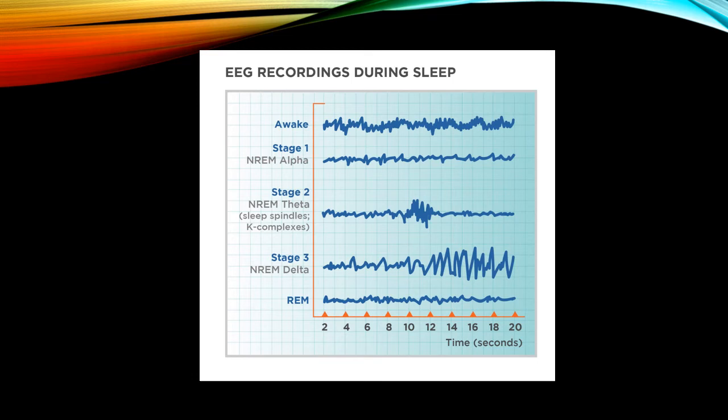In REM sleep, the frequency is 15 to 30 Hz, which is quite similar to when a person is awake at 15 to 50 Hz, and the amplitude is also less than 50 microvolts, again similar to wakefulness. The graphic representation indicates rapid eye movements seen as sharp rapid movements. Brain waves during REM sleep are of low amplitude and mixed frequency, consistent with higher activity compared to stages two and three.